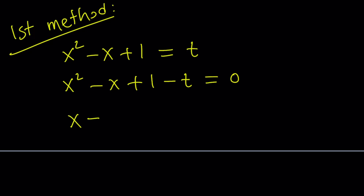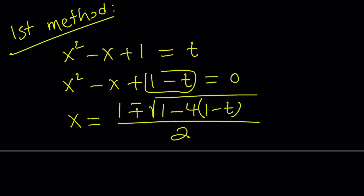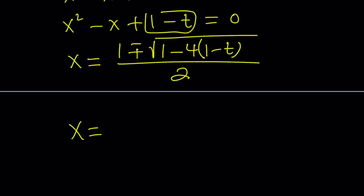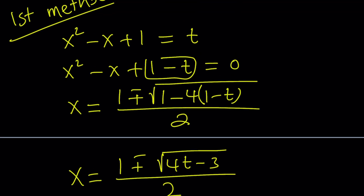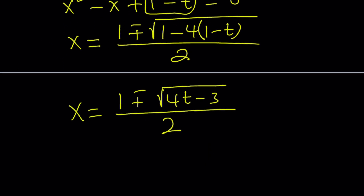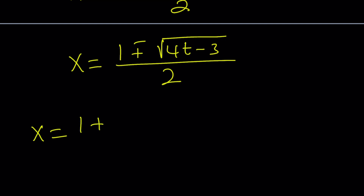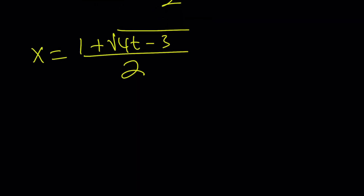Let's write the quadratic formula for this equation: x equals negative b, which is 1, plus or minus the square root of b squared — which is 1 again — minus 4ac. c is 1 minus t, so that's 4 times 1 minus t because a equals 1. Simplifying inside the radical gives us 1 minus 4 plus 4t, which is 4t minus 3, divided by 2. There are two solutions; let's go with the plus one. It shouldn't matter — both give the same answer. So this is our x in terms of t.